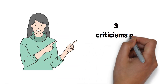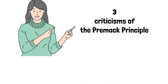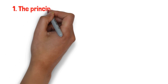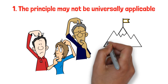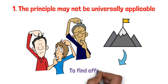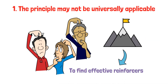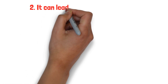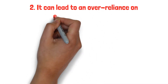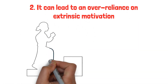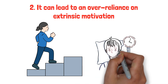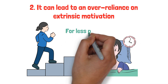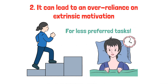Now let's explore three criticisms of the Premack principle. Firstly, the principle may not be universally applicable. Some individuals might not have a clear preference for certain activities, making it challenging to find effective reinforcers. Secondly, it can lead to an over-reliance on extrinsic motivation. If individuals always need a preferred activity to motivate them, they might struggle to develop intrinsic motivation for less preferred tasks.